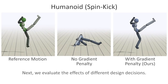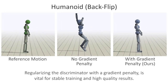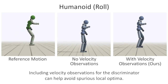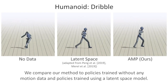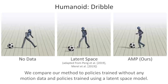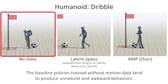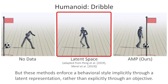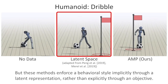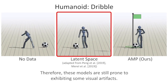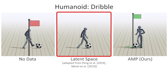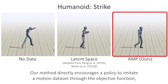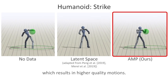Next, we evaluate the effects of different design decisions. Regularizing the discriminator with a gradient penalty is vital for stable training and high-quality results. Including velocity observations for the discriminator can help avoid spurious local optima. We compare our method to policies trained without any motion data and policies trained using a latent space model. The baseline policies trained without motion data tend to produce unnatural and awkward behaviors. The latent space policies are able to produce more natural behaviors than the baseline policies, but these methods enforce a behavioral style implicitly through a latent representation rather than explicitly through an objective, and are still prone to exhibiting some visual artifacts. Our method directly encourages a policy to imitate a motion dataset through the objective function, which results in higher-quality motions.